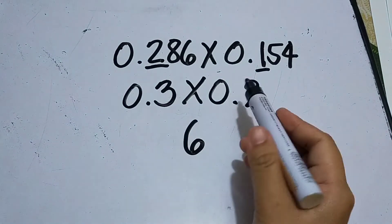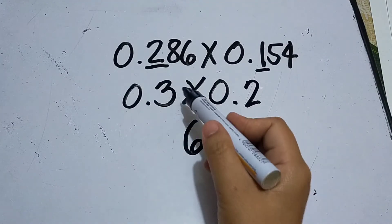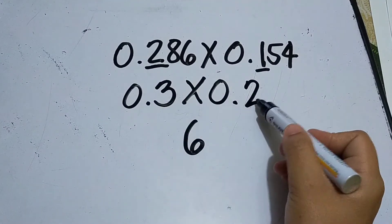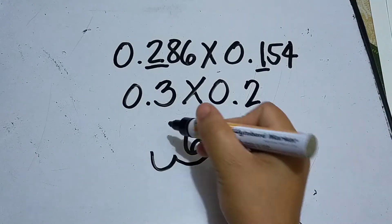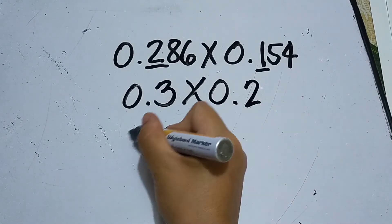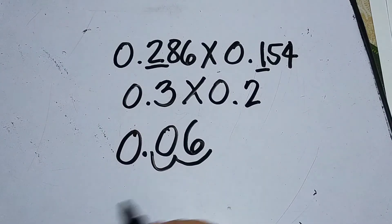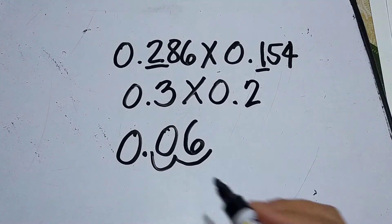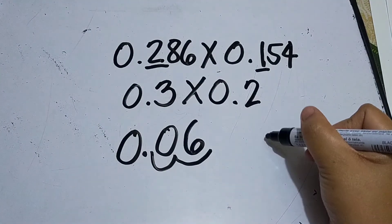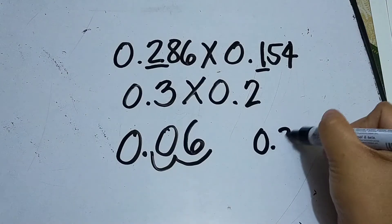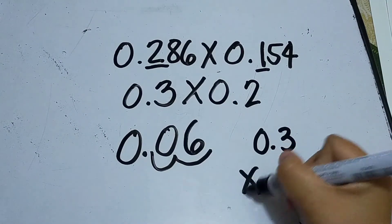Then afterwards you can multiply: three times two is six. But it doesn't stop there - we count the digits to the right of the decimal point: one, two, one, two. And then the answer is six hundredths. Even if you work it out, that's the result that will appear, or solve it in column form.